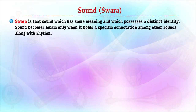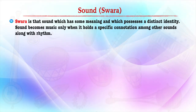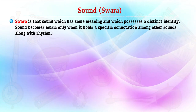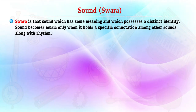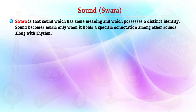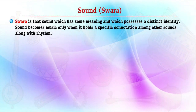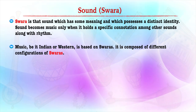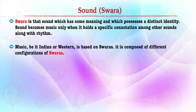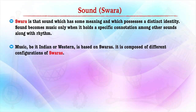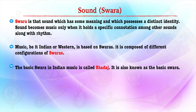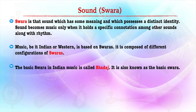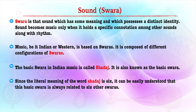The first element is swara, or sound. Swara is that sound which has some meaning and which possesses a distinct identity. Sound becomes music only when it holds a specific connotation among other sounds, along with rhythm. Music, whether Indian or Western, is based on swaras and is composed of different configurations of swaras.